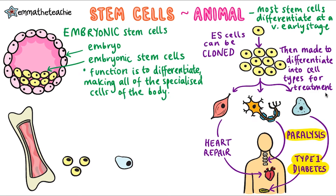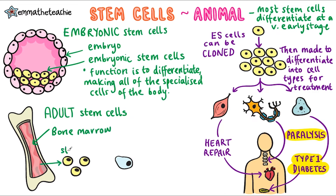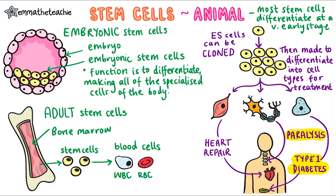Although most animal stem cells differentiate at the early stage of development, there are some that remain into adulthood — we call these adult stem cells. One place where adult stem cells are found is in the bone marrow. These can differentiate to form many other types of cells including blood cells, such as white blood cells and red blood cells. Adult stem cells are more limited in their uses as they tend to only make a small number of different cell types, whereas embryonic stem cells can make almost any cell in the body.